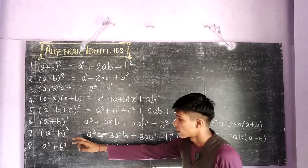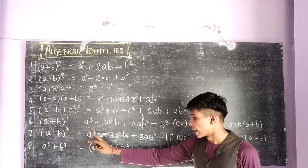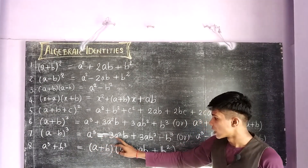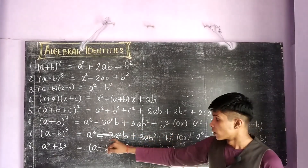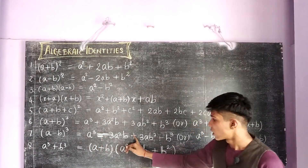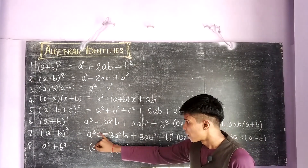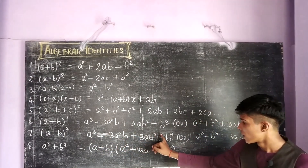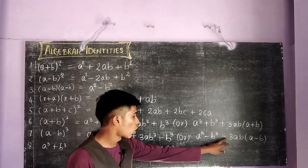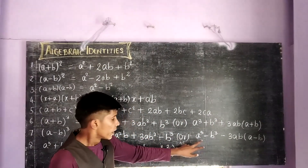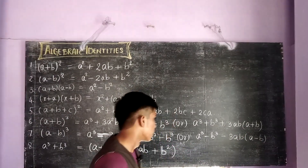The next identity is a minus b whole cube, which equals a cube minus 3a square b plus 3ab square minus b cube. In this we can see that the positive and negative signs change alternatively: the first is minus, the second is plus, and the third is minus. Similarly, if we take minus 3ab as common in this expression, we can get a cube minus b cube minus 3ab into a minus b.